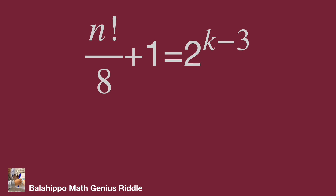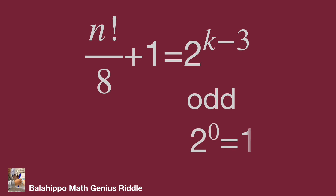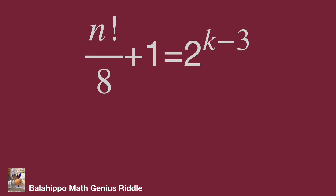Now, 2^(k−3) cannot be an odd number because k minus 3 would need to equal 0, but that leads to a contradiction. Since k minus 3 is not zero, 2^(k−3) is an even number. Then n factorial over 8 plus 1 is even, so n factorial over 8 must be an odd number.